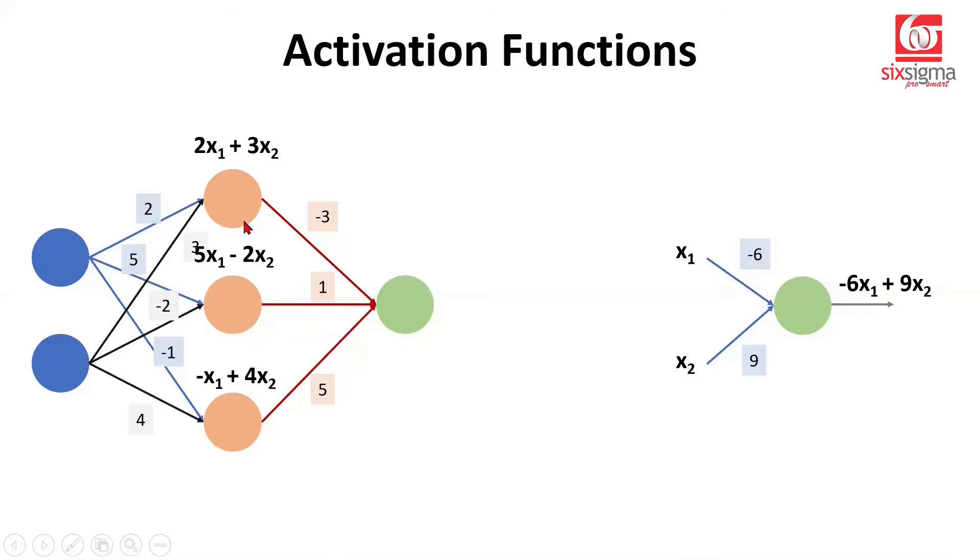That is why we would always need a nonlinear activation function at the hidden neurons. Now with this motivation, we will start looking at different activation functions, and we'll do comparisons between them to understand what are the limitations or strengths that these activation functions bring. That's next.